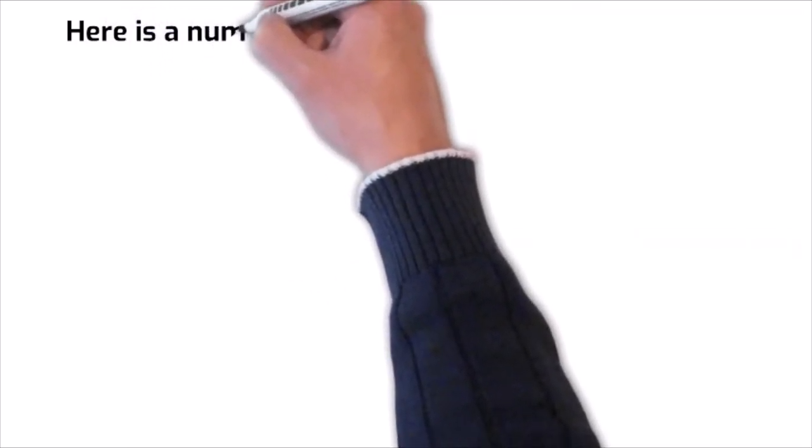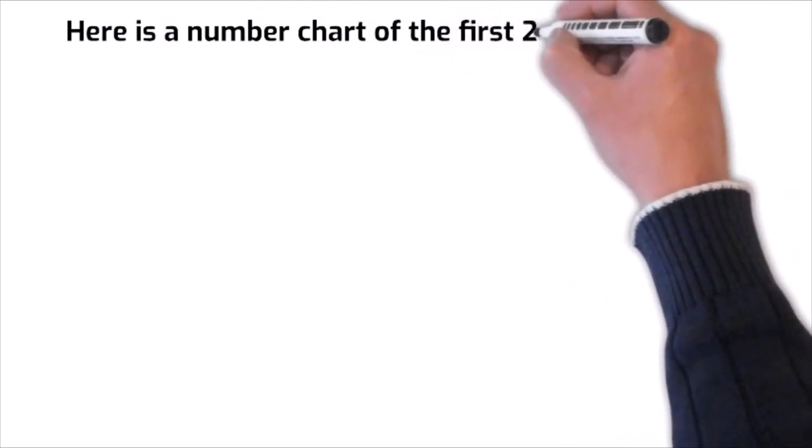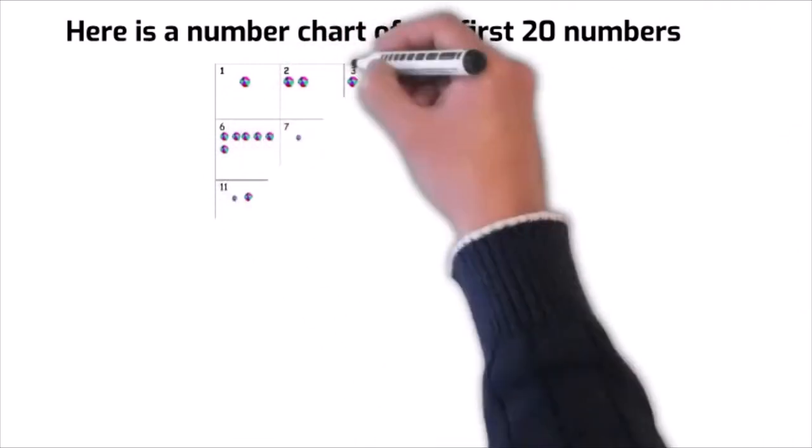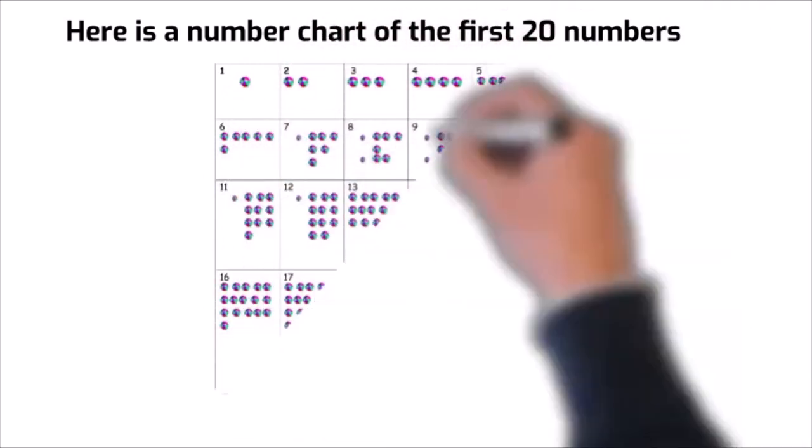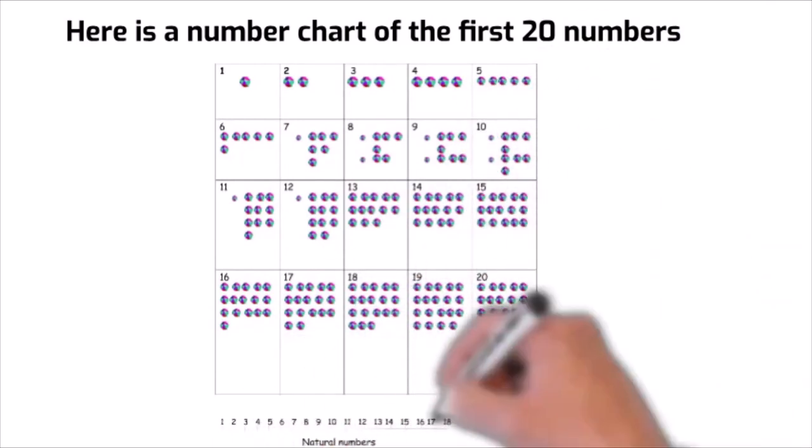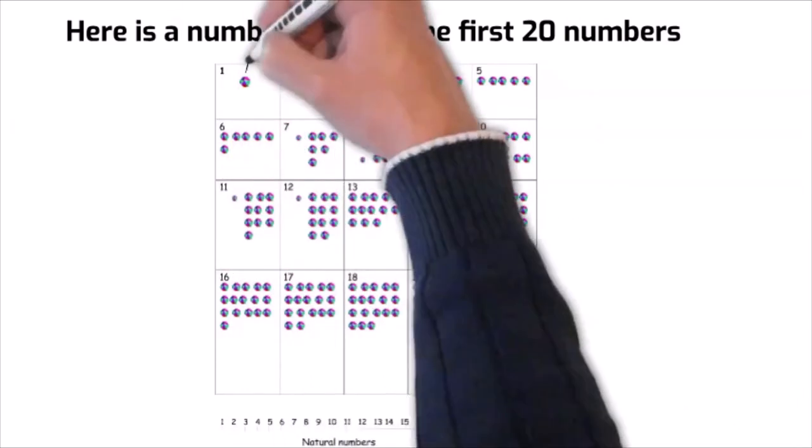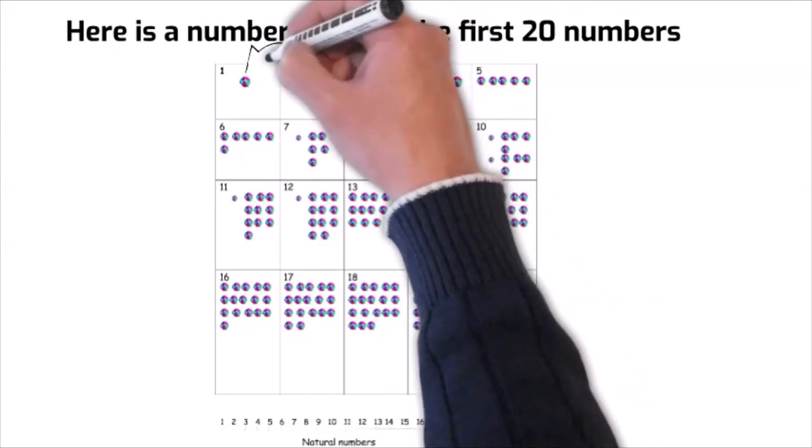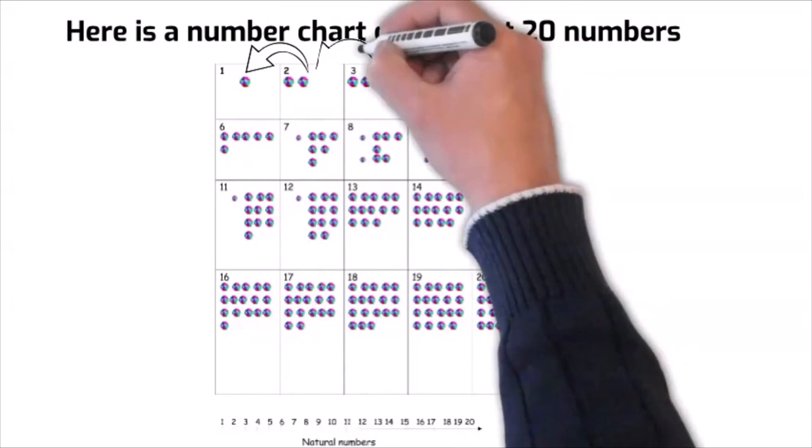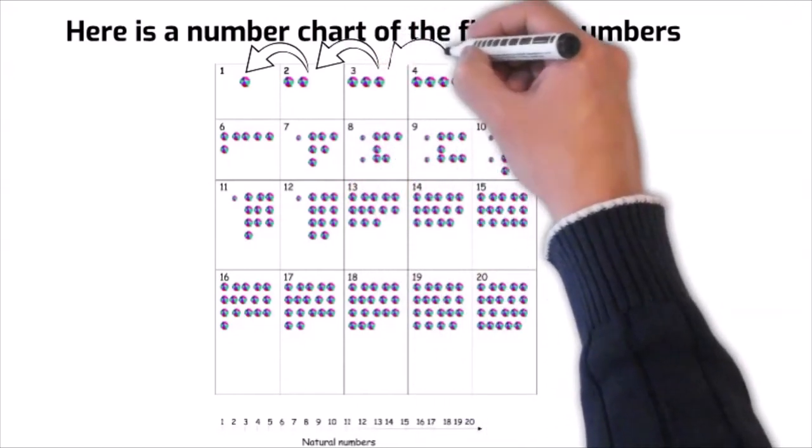Here is a number chart of the first twenty numbers. From our number chart we notice that the number of balls increases by one as we move from one box to the next. The number two is one more than one, the number three is one more than two, and number four is one more than three.